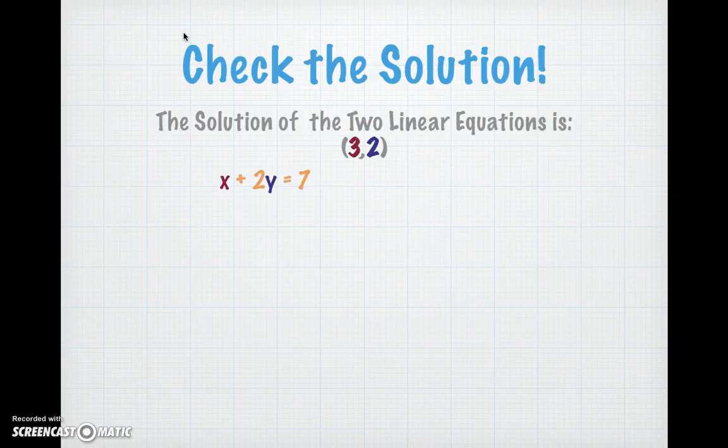So, taking our first equation, we're going to put in 3 for x and 2 for y. We get 3 plus 2 times 2 equals 7, which simplifies to 3 plus 4 equals 7, which means it's true.